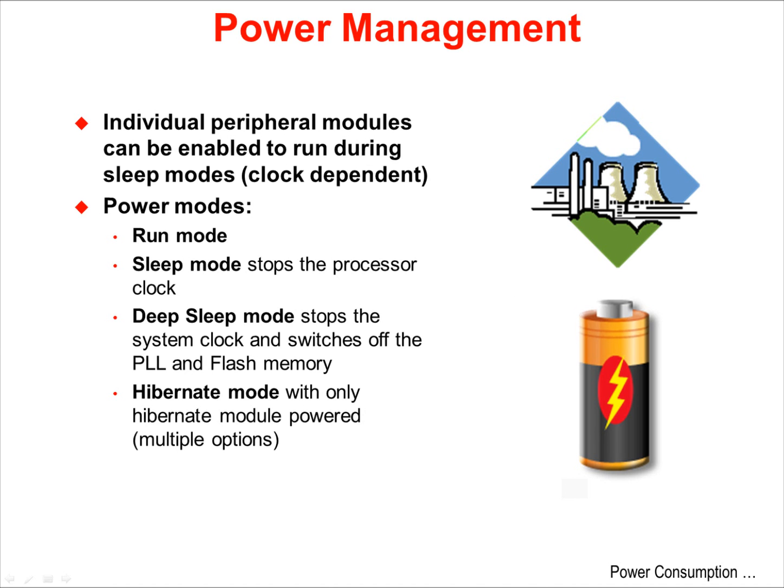Individual peripheral modules and the clocks that run them can be enabled to operate during sleep modes, dependent on whether or not the clock is operating during that sleep mode. The four power modes are: run mode, sleep mode where the processor clock is stopped, deep sleep mode where the system clock is stopped and the PLL and flash memory are off, and hibernate mode where only the hibernate module is powered.